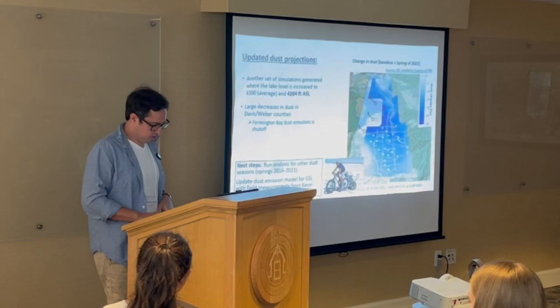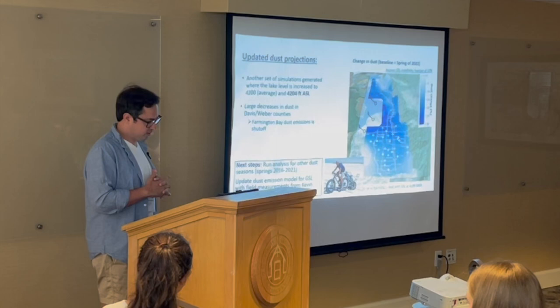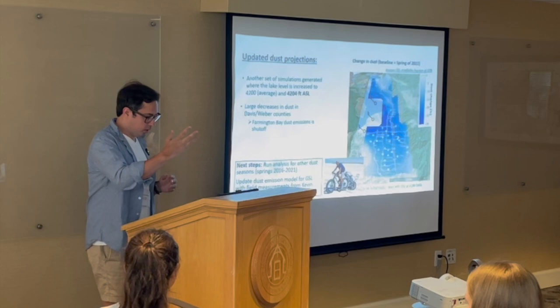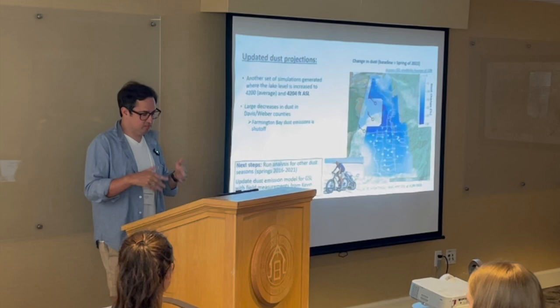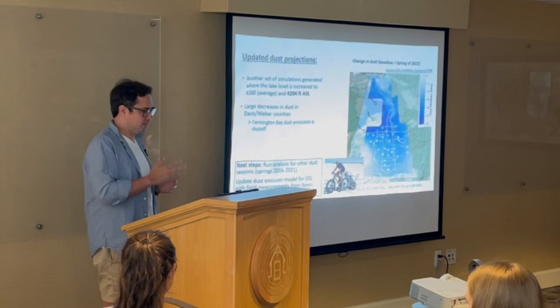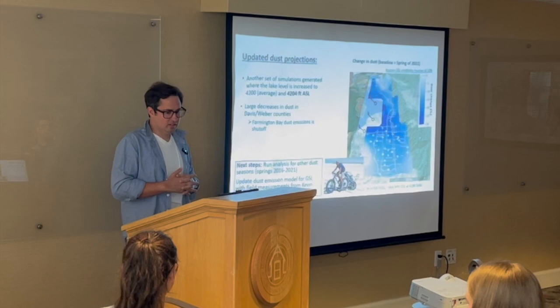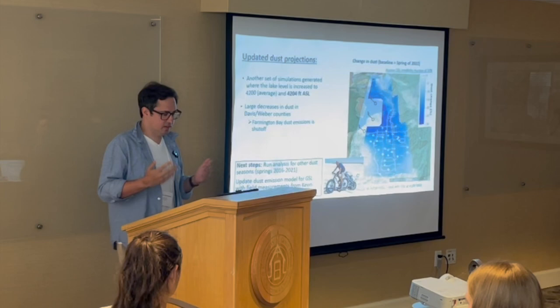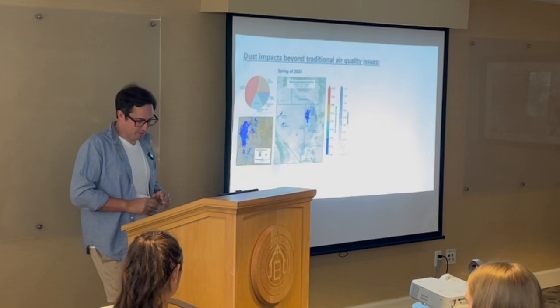Next steps for this research include running the analysis for other dust seasons to get a bigger sample size. I've also been working closely with Kevin to incorporate field measurements into the model for more realistic projections. For example, we're currently assuming an erodibility fraction of only 10%, but Kevin has indicated it might be closer to 20% as the crust starts breaking down. That means these results could actually be somewhat underestimated, which could have pretty big implications.